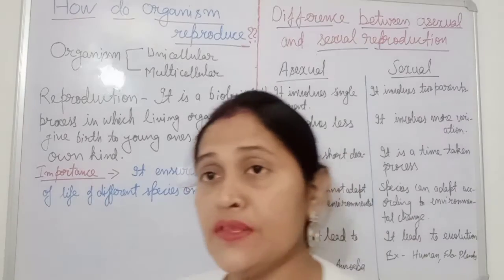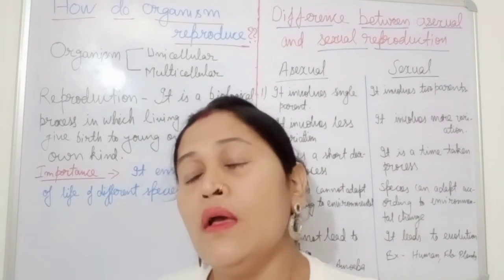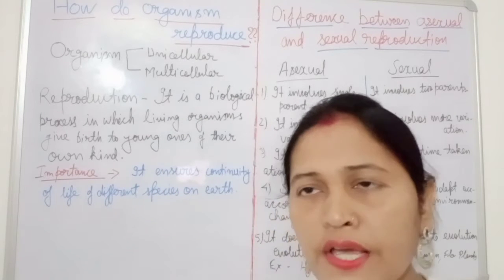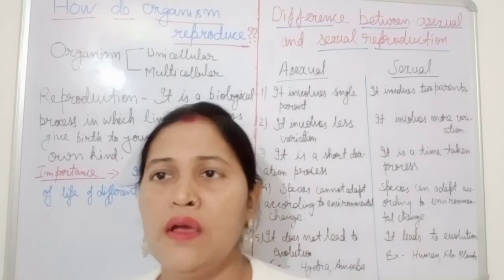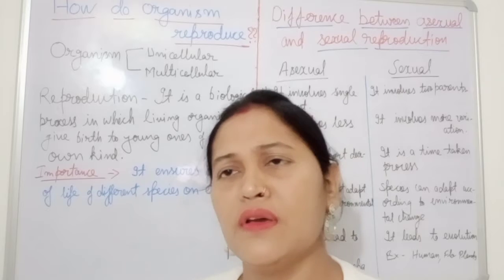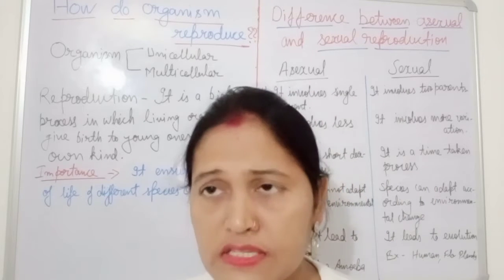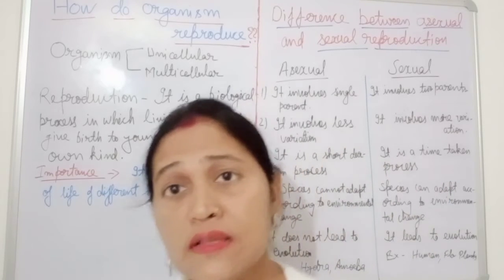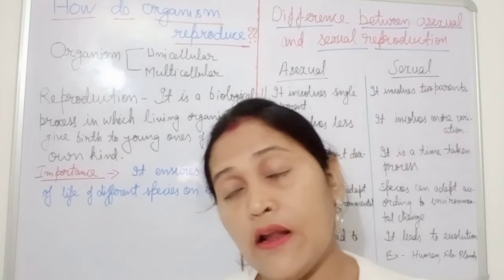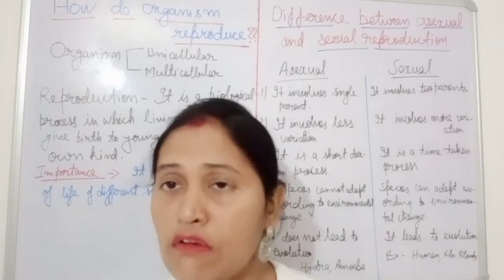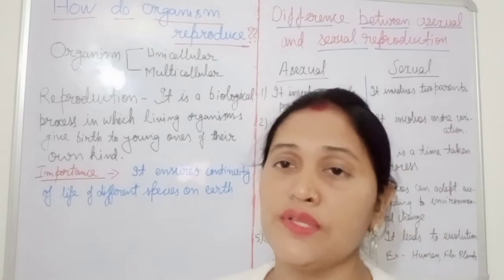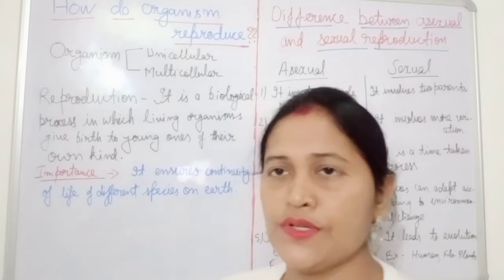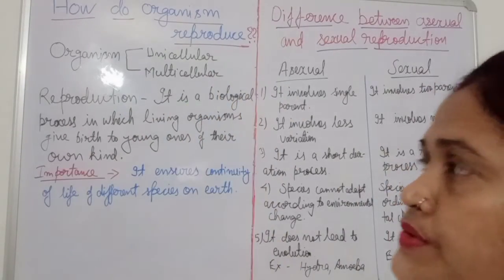Have you noticed that all the people surrounding you are not exactly similar? We can see variation in various parameters — height, color, and so on. Offspring are also not exactly a carbon copy of their parents. Why are offspring not exactly similar to their parents? All these things we will study in this chapter — How Do Organisms Reproduce.